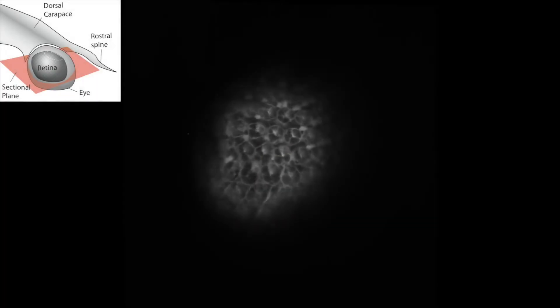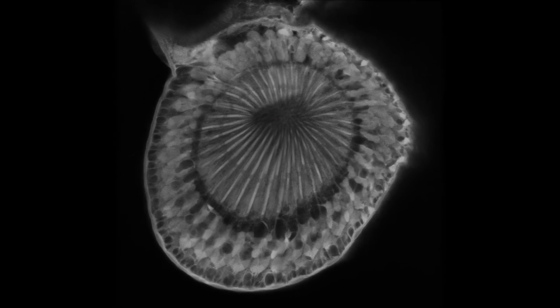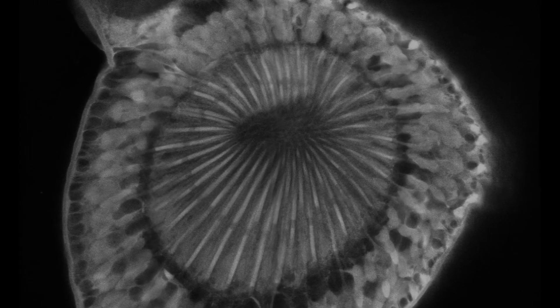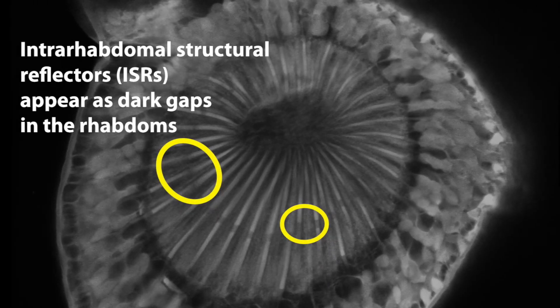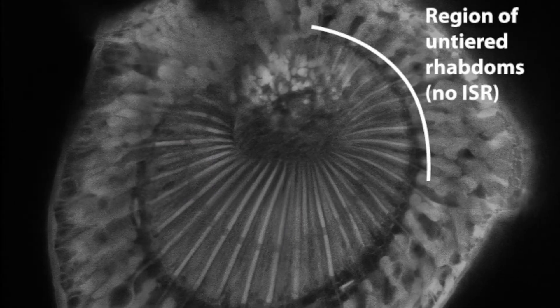The ISR is only present in the lateral and ventral units of the eye, as we can see using 3D imaging with two-photon microscopy. The ISRs appear as dark gaps in the rhabdoms. The dorsal part of the eye reveals a region of un-tiered rhabdoms and no presence of ISRs.